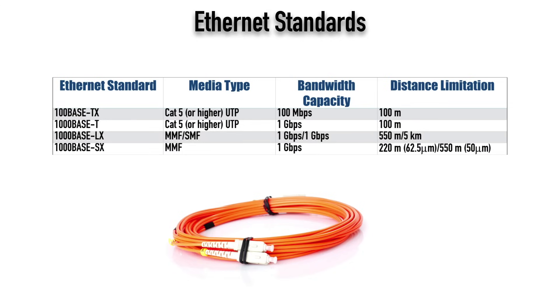Another Ethernet standard that uses fiber is 1000BASE-SX. This is a multi-mode fiber standard. It, again, has a throughput of 1 gigabit per second. And here, the distance limitation varies based on the diameter of that core.